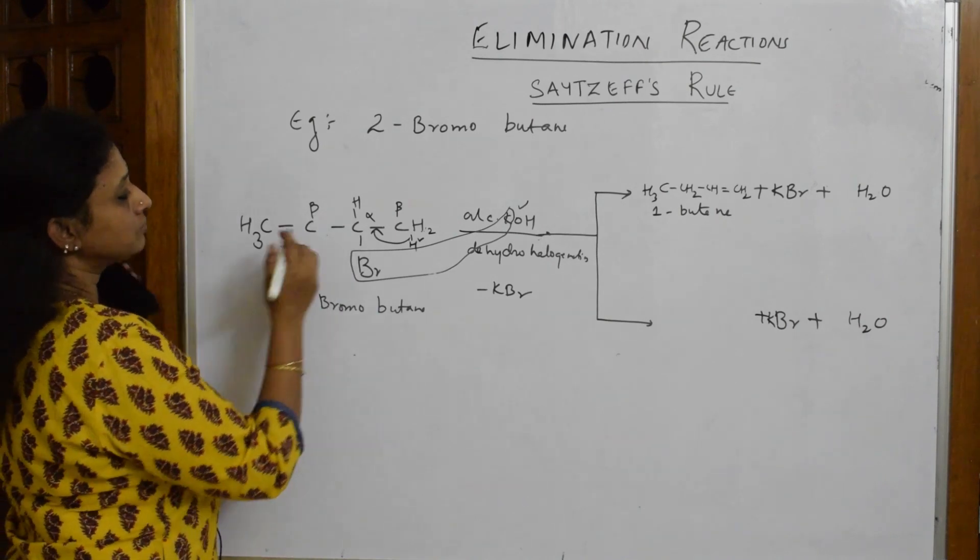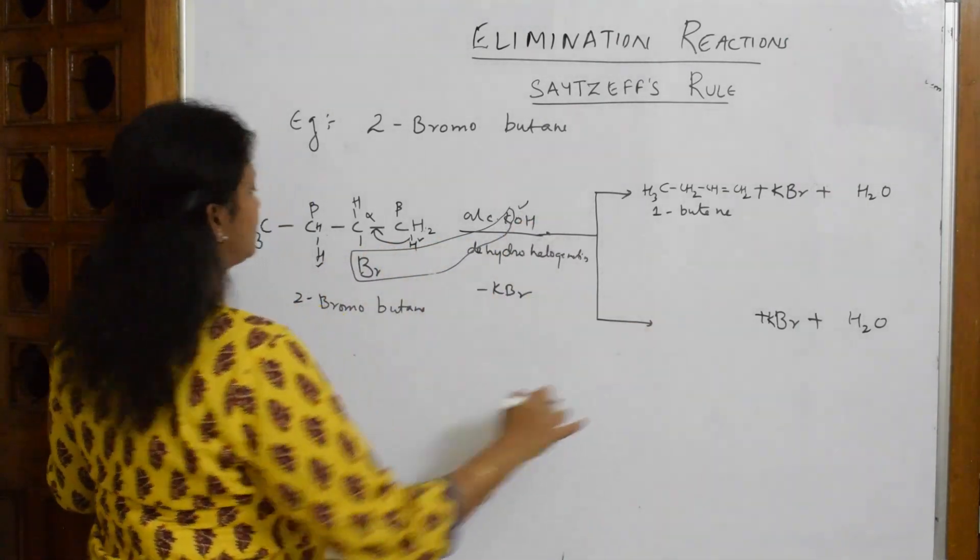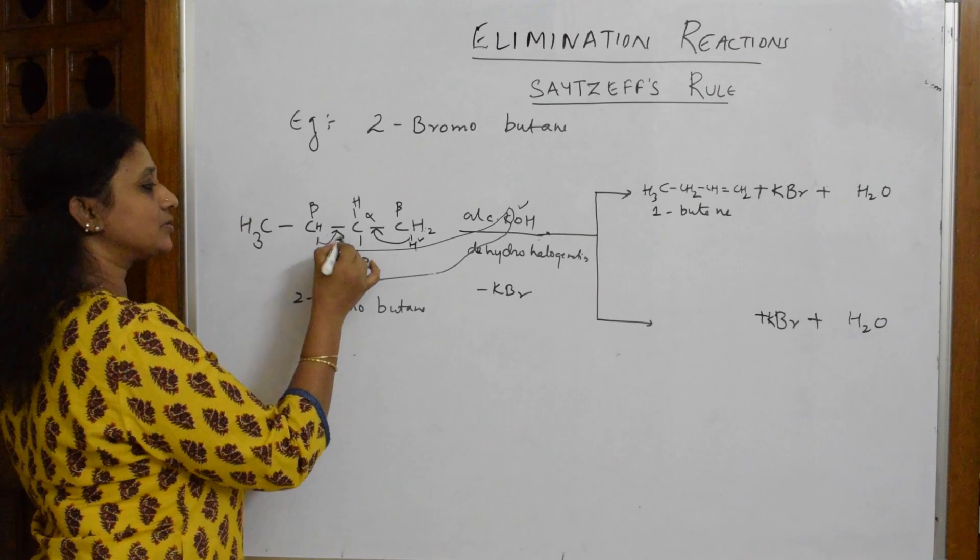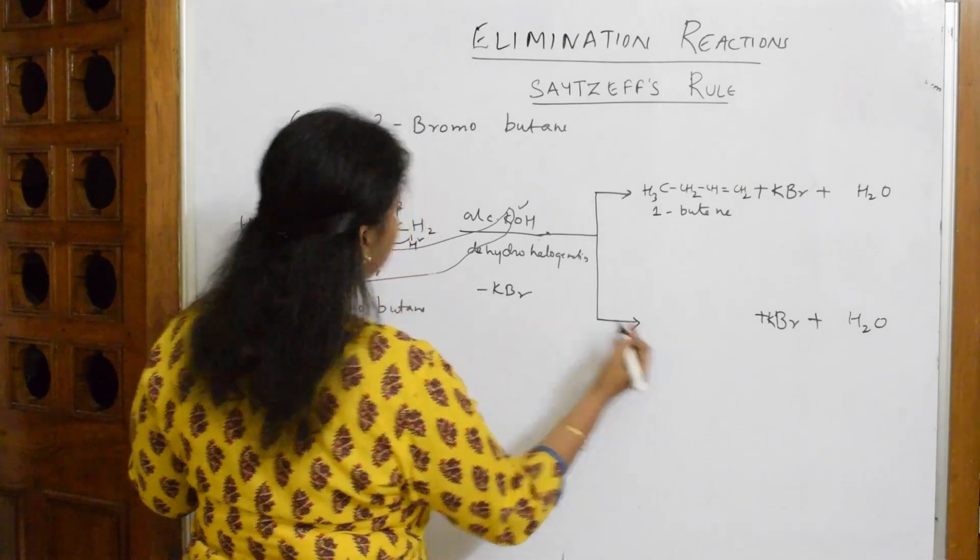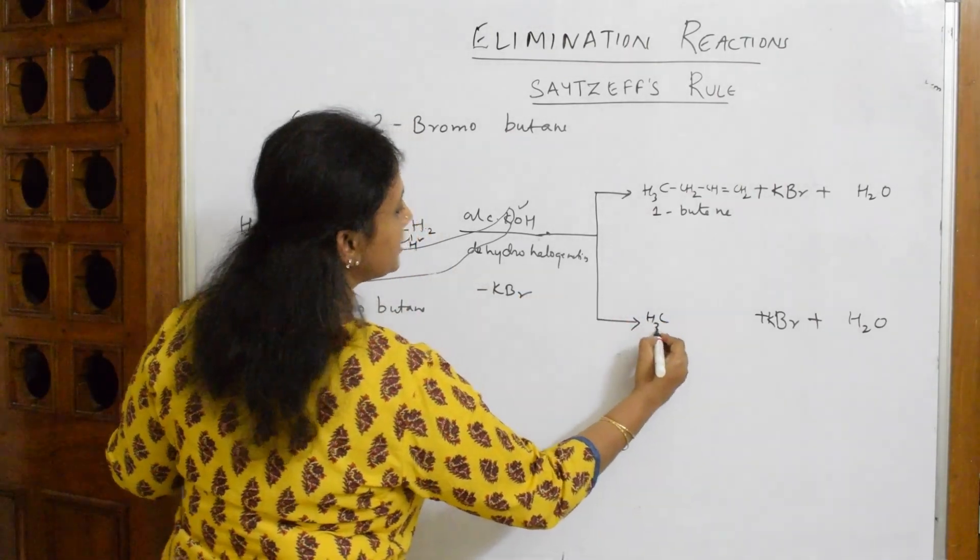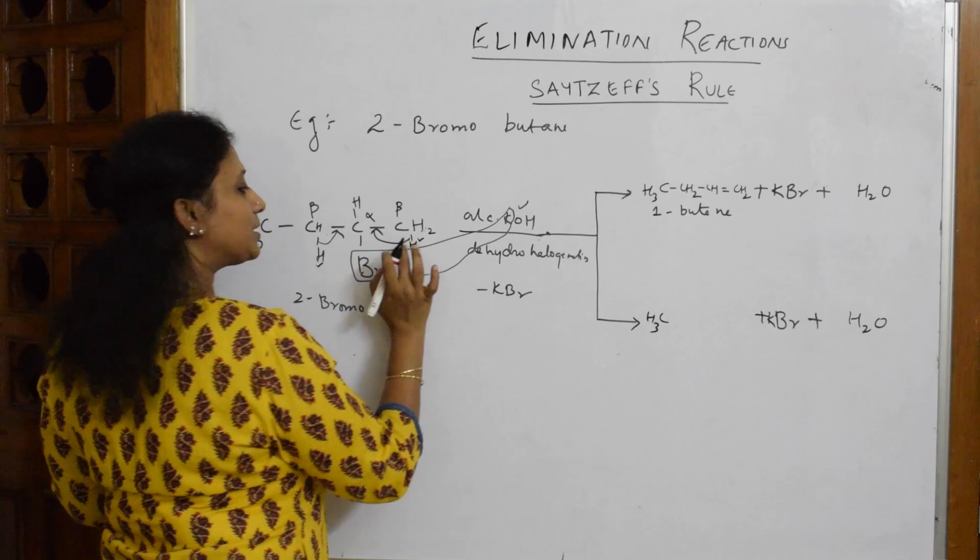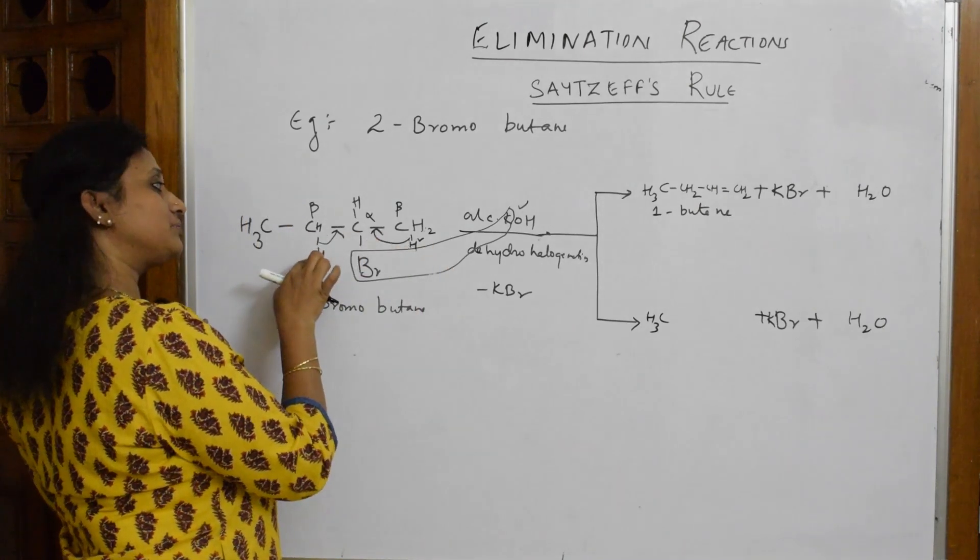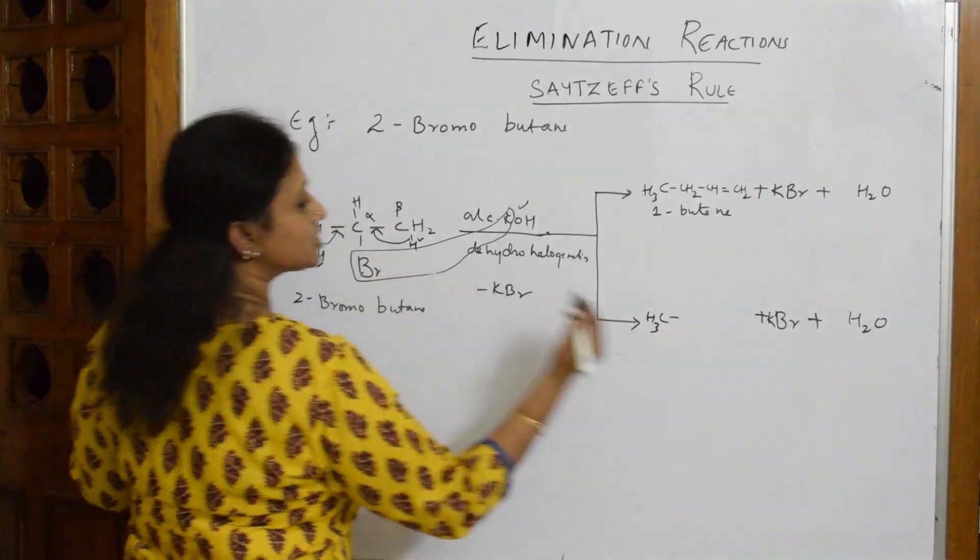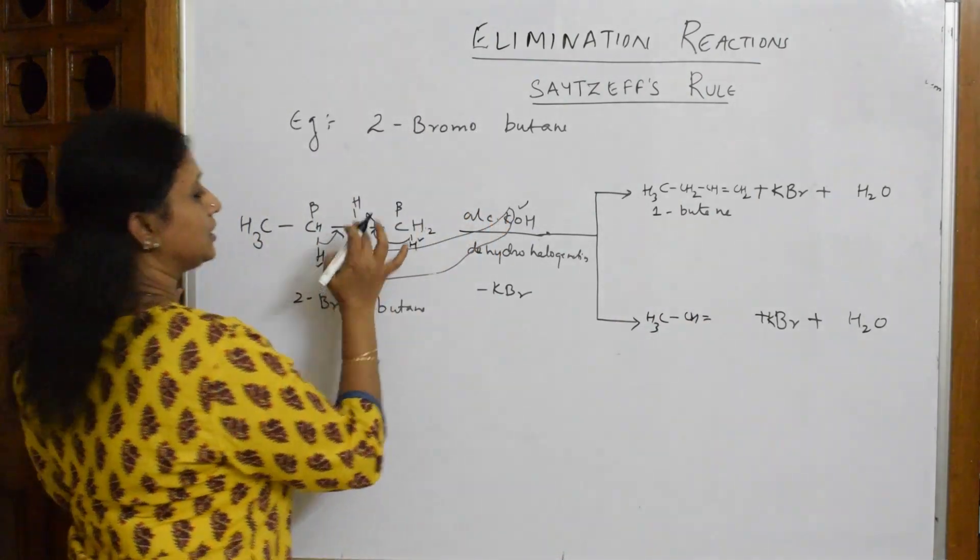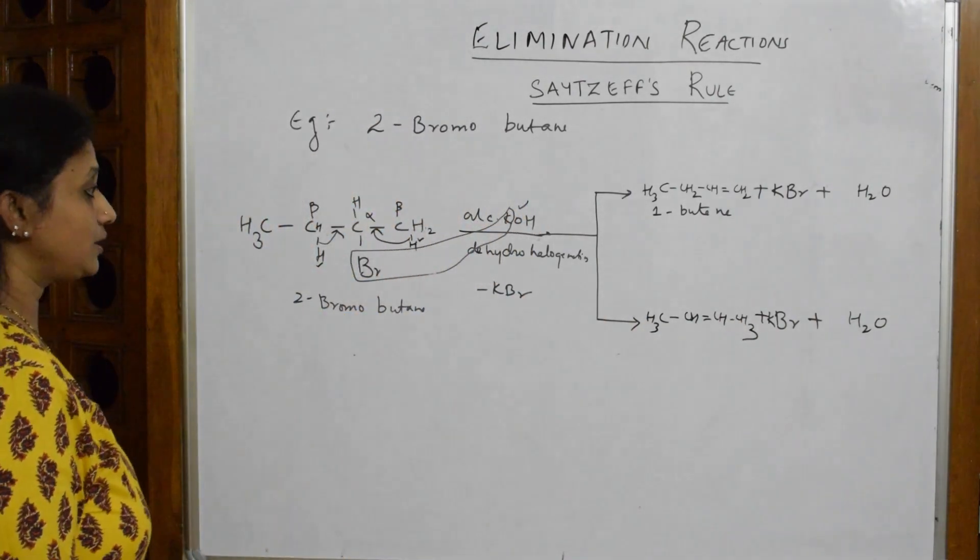This H and this OH has come out as water. Now what is going to happen? This bond is going to shift here. What product will I get? CH3, single bond, CH, double bond, CH, single bond, CH3. Observe carefully: earlier I shifted the double bond here, now I'm shifting the double bond here because I picked up hydrogen from here. What alkene did I get?